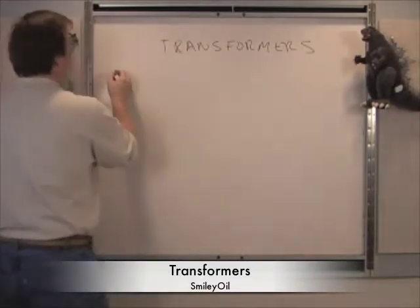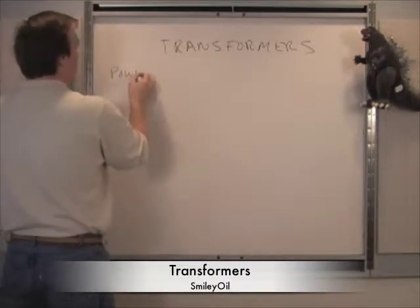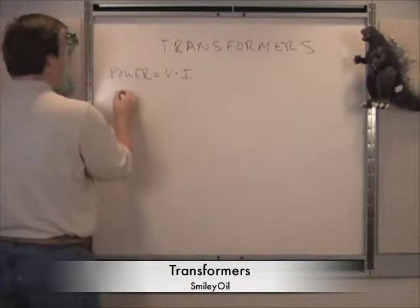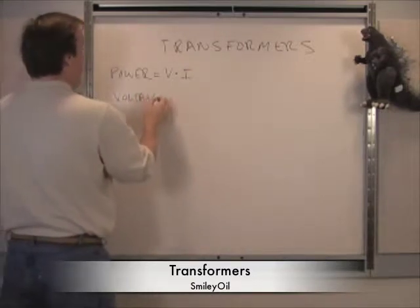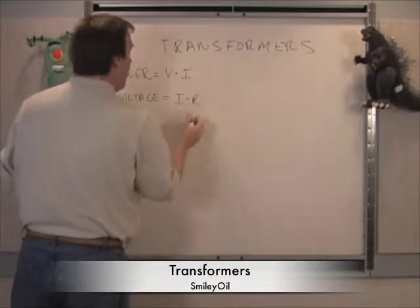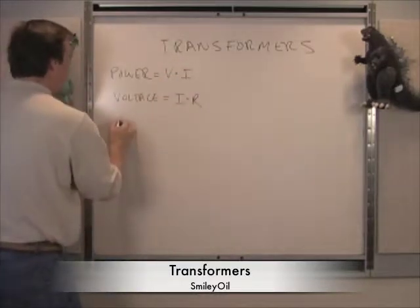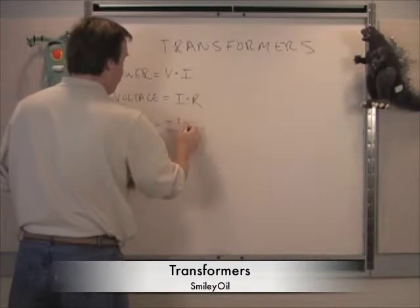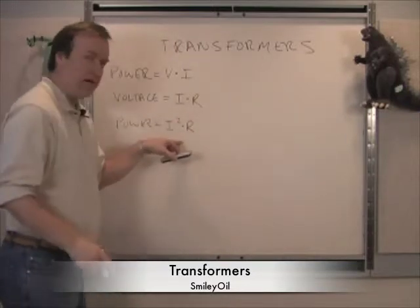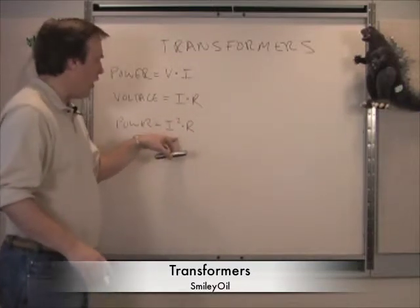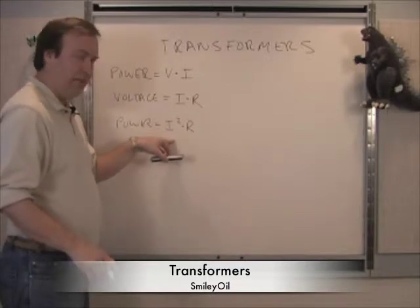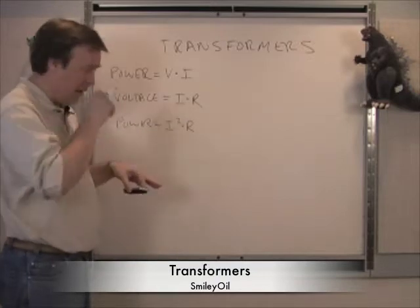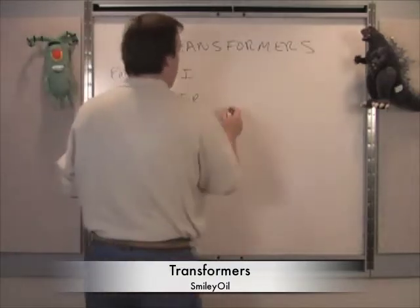We know power is equal to voltage times current. We know that voltage is equal to current times resistance. When we combine these two equations, we get power is equal to I squared R. This is the equation we're going to take advantage of. We're going to try to get this current I down by using a transformer, because this is where we're going to lose power in the lines going to your house.